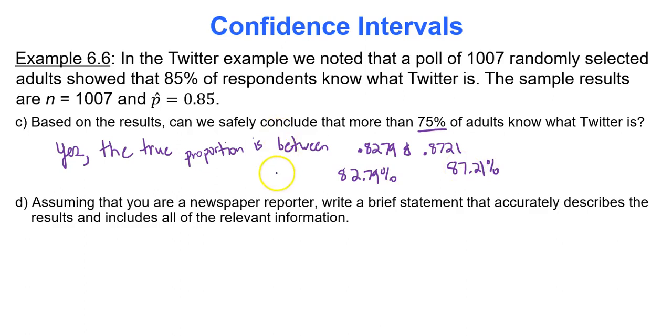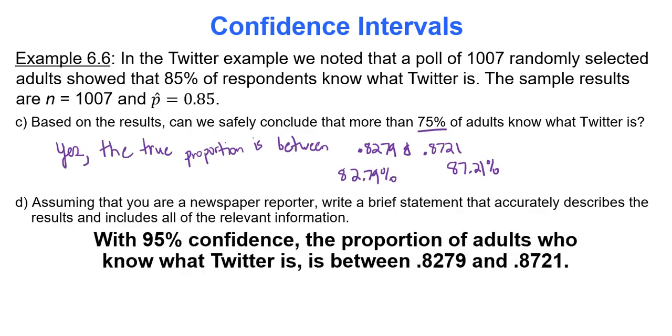Now assume you're a newspaper reporter, write a brief statement that accurately describes the results and includes all of the relevant information. In order to describe a confidence interval in words, we use the following format. We say, with 95% confidence, so we state our confidence level, the proportion, and in this case we're talking about the proportion of adults who know what Twitter is, is between 0.8279 and 0.8721. That's always the structure for writing your confidence interval statement. If you write a confidence interval, you must write out the description. The two go hand in hand.